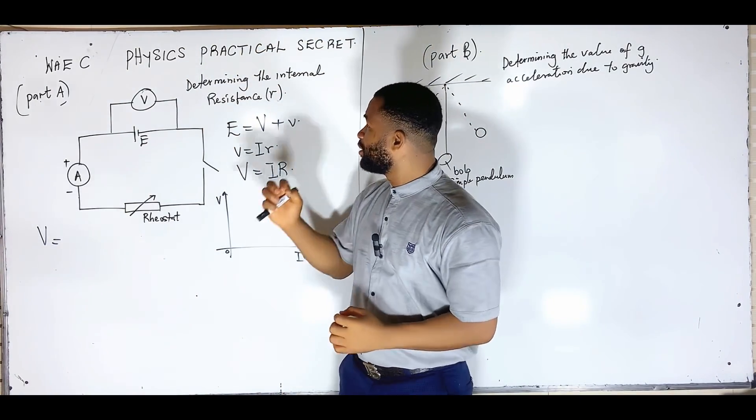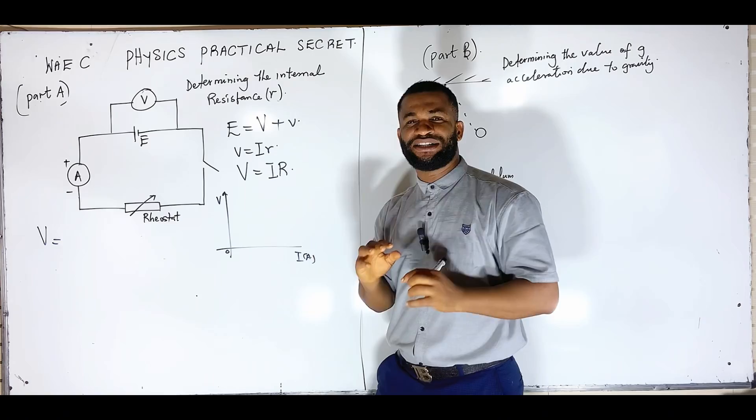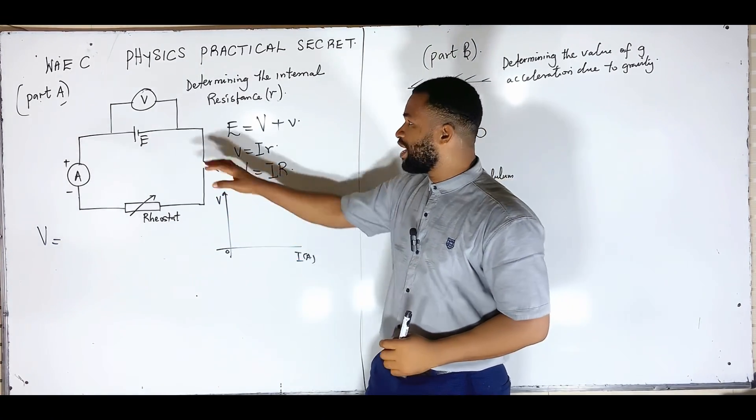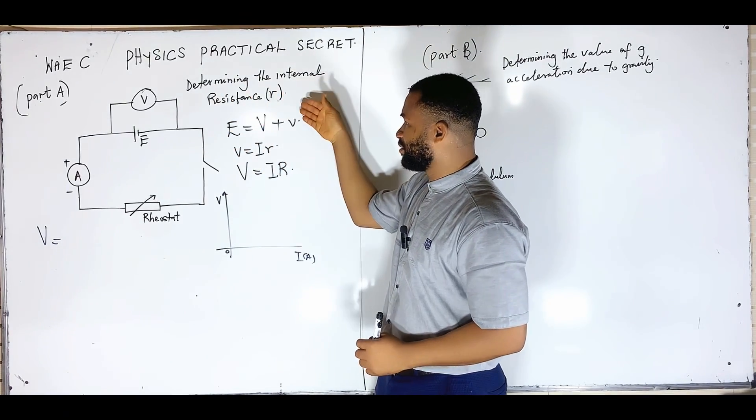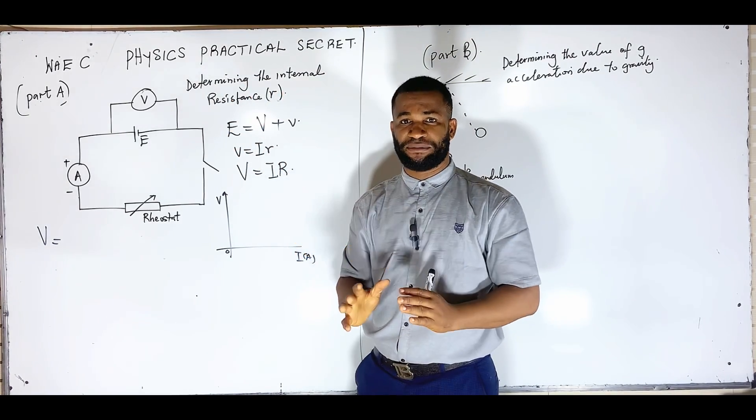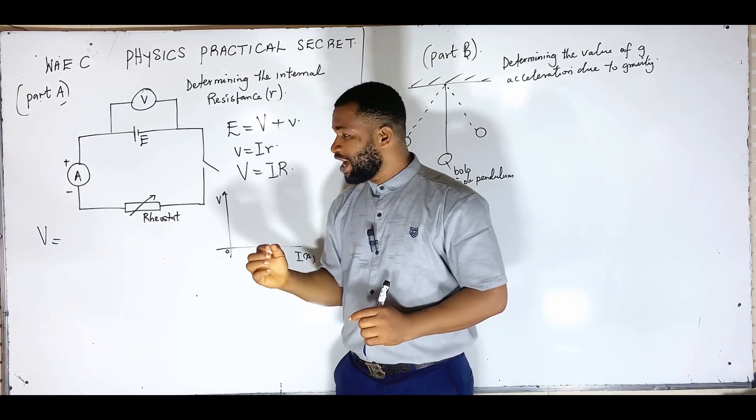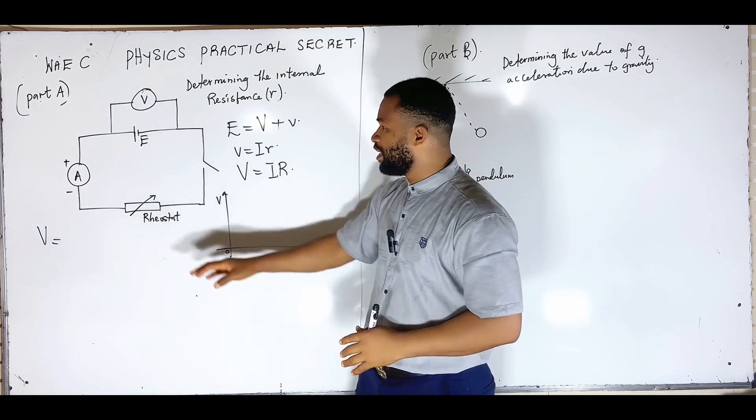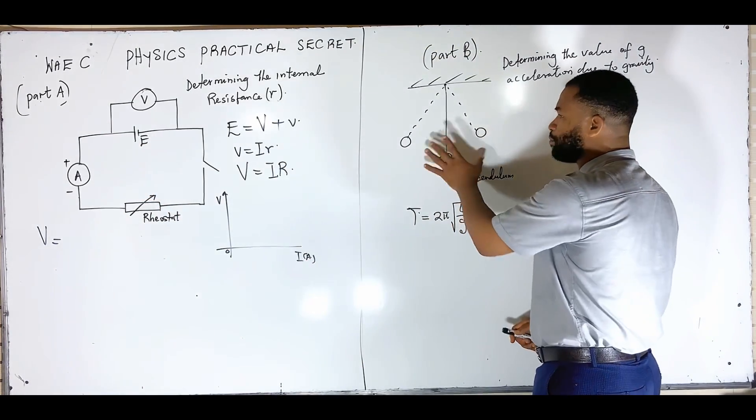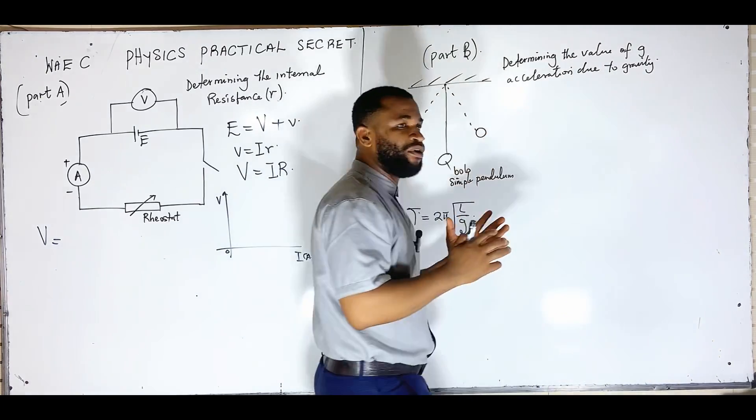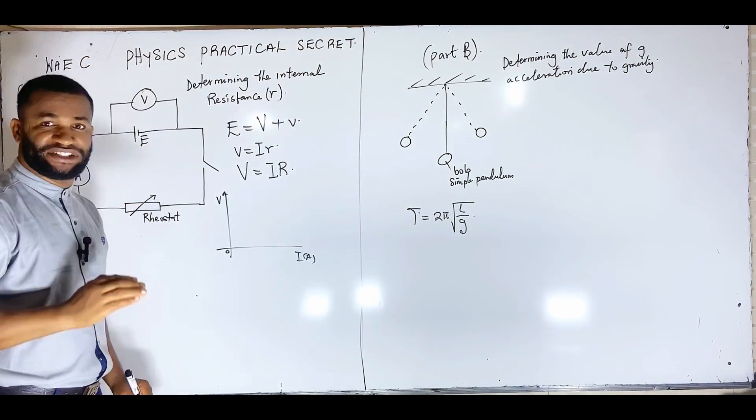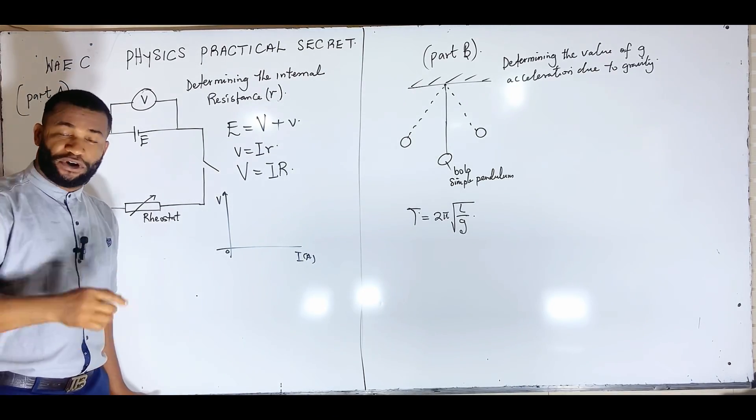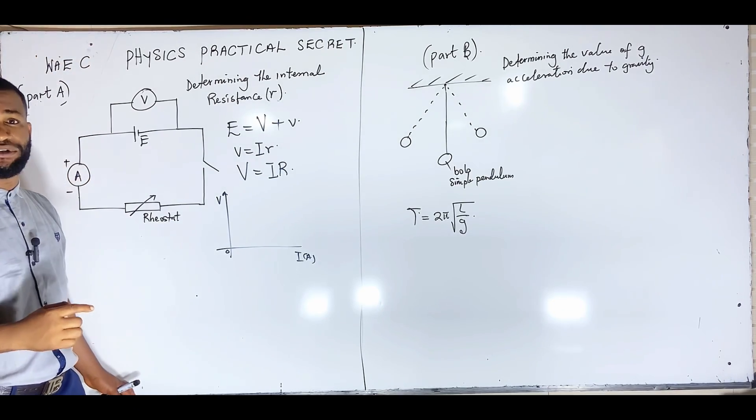Welcome to this physics practical secret. There are a lot of secrets you need to know about physics practicals. One of them is this: you are asked to find a given thing like determine the internal resistance. You have done your experiments but you don't know how your graph will look like and you don't know the slope you're going to get. In this lesson I'm going to explain that for electricity and simple pendulum. Please don't forget to hit the subscribe button, like this video and comment.